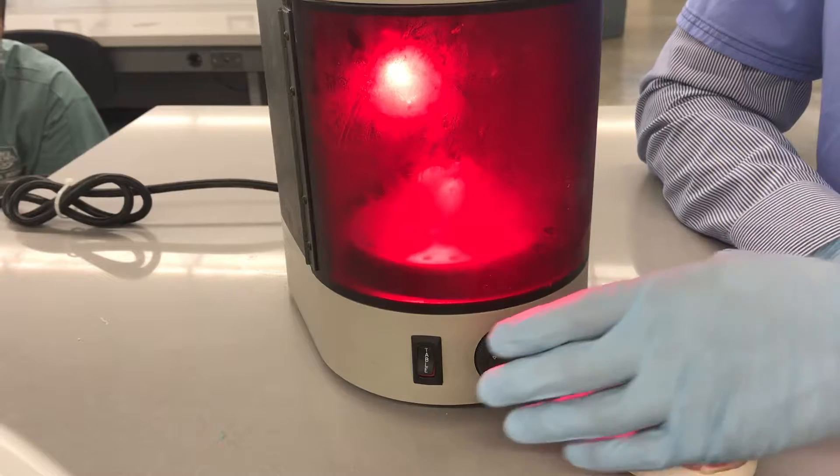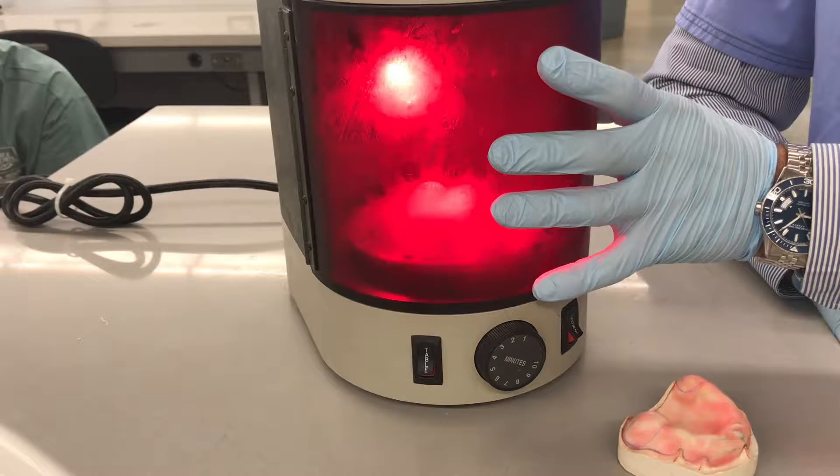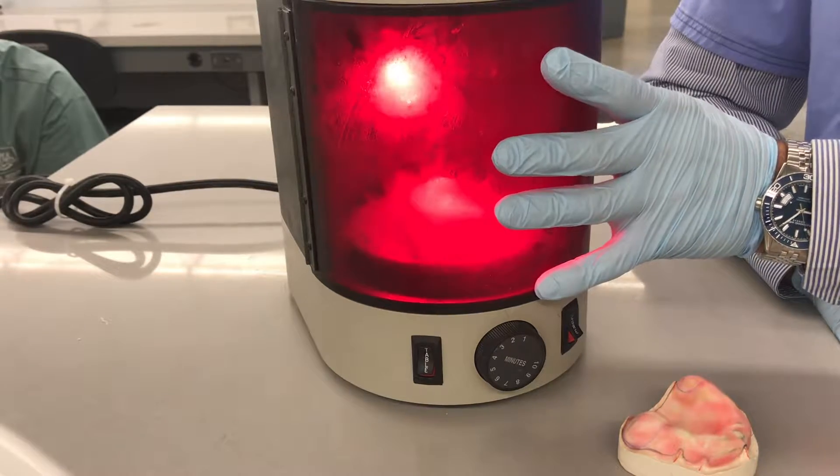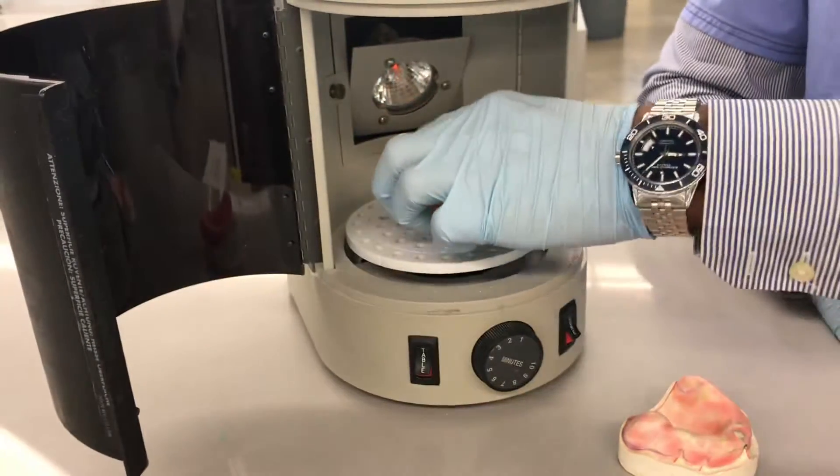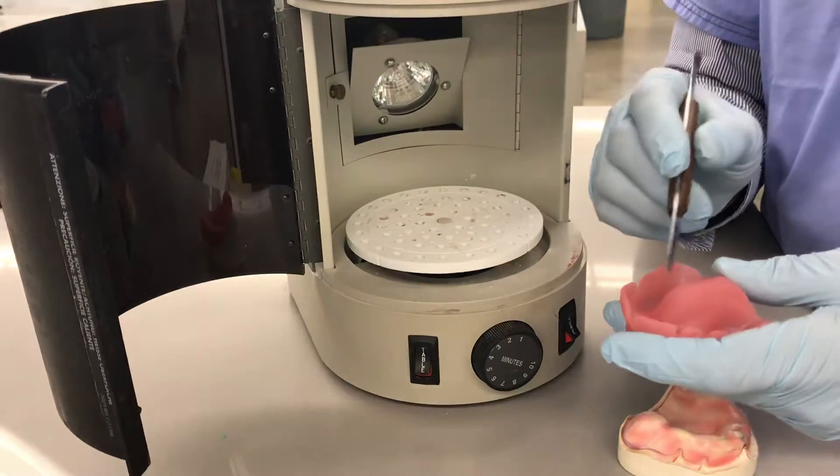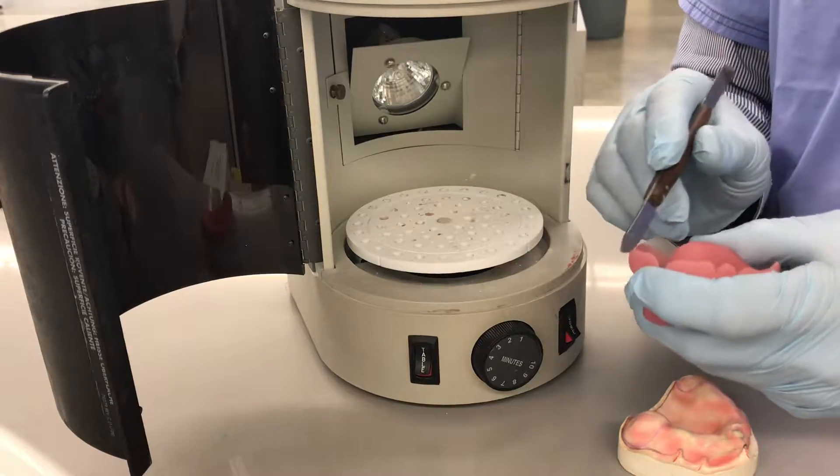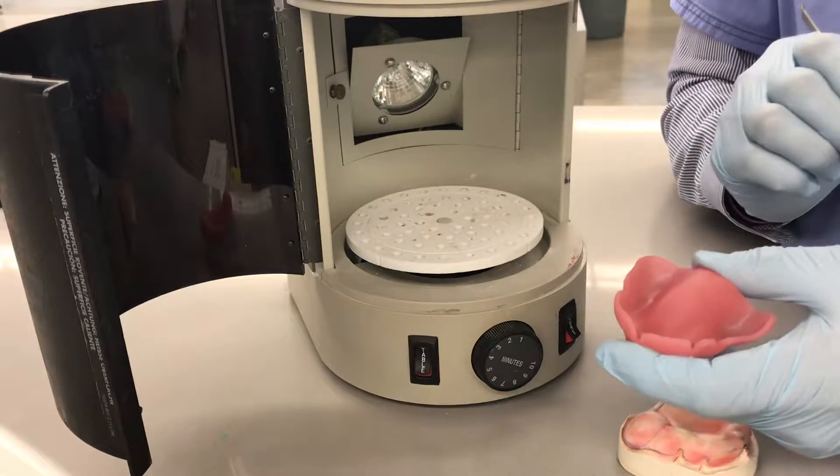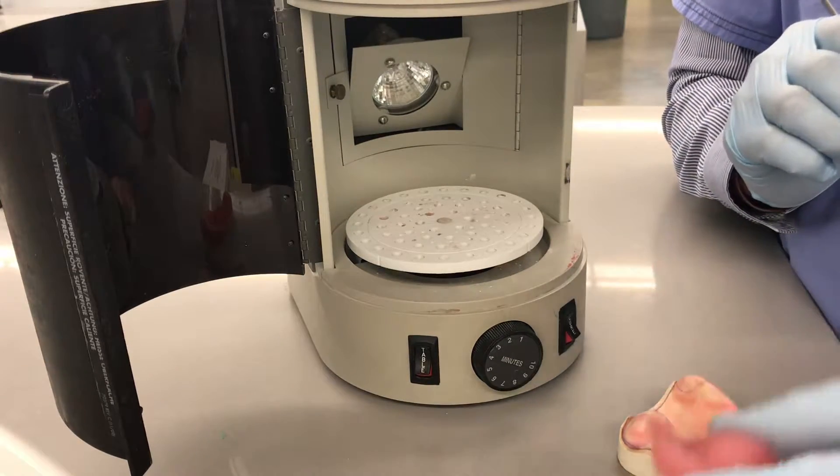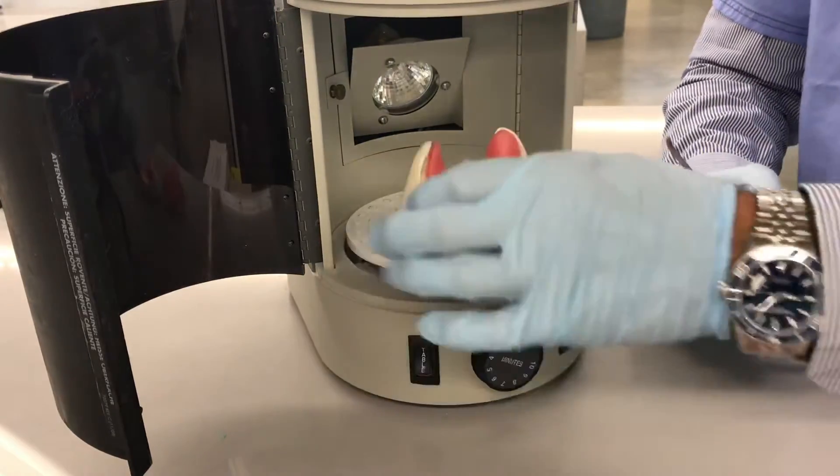So even though my timer's at three minutes, I can interrupt this timer any time I want. So that's about 30 seconds. I'm going to take this out and give it a final inspection. Make sure that all the peripheries are thoroughly cured throughout. And that looks pretty good. So I'm going to set the upper one aside and bring the lower one in.